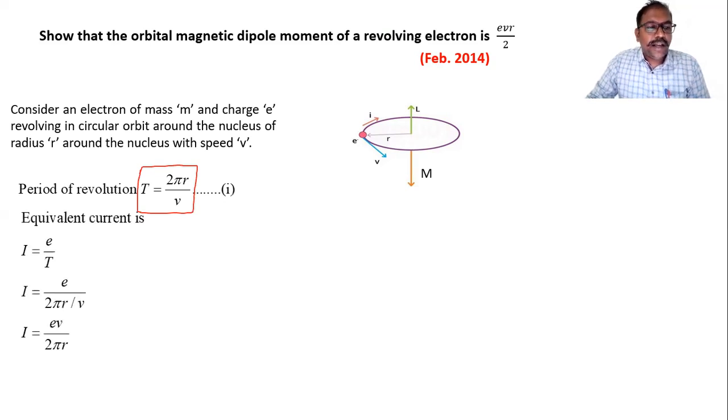Now here, equivalent current is current is given by formula charge by time. Charge on electron is E, time by capital T. So we substituted this capital T in this formula. So we get E divided by this capital T means 2 pi R by V. This V is shifted up. So we get here, I is equal to E V divided by 2 pi R. This is the current.